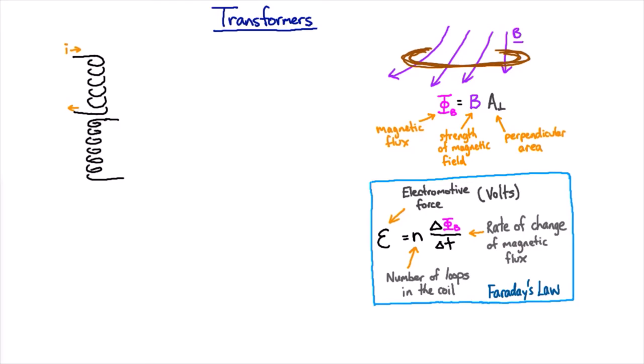So you take one solenoid, which is just a coil of wire, and you pass a current through it. That current is going to make a magnetic field running down there, and the advantage of having an alternating current is that that magnetic field is also going to be alternating up and down. So you've got a changing magnetic field which is going to give you a changing magnetic flux.